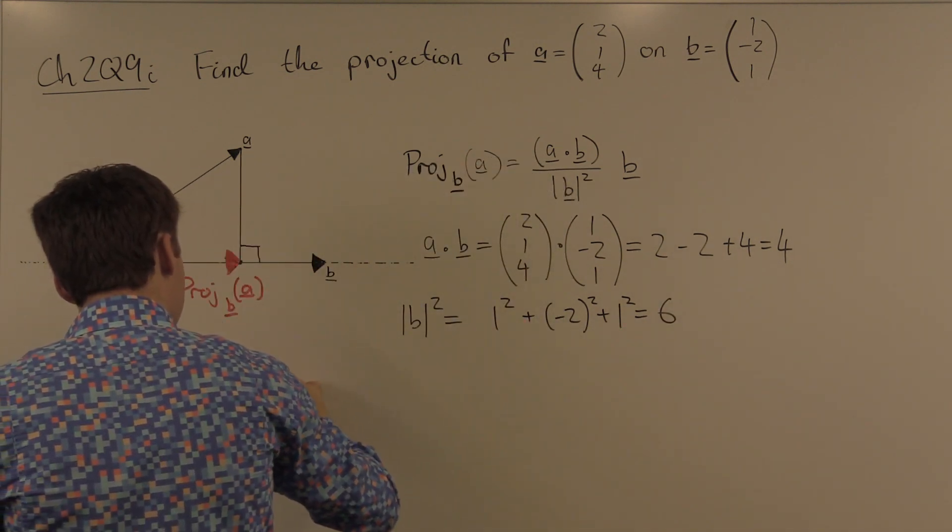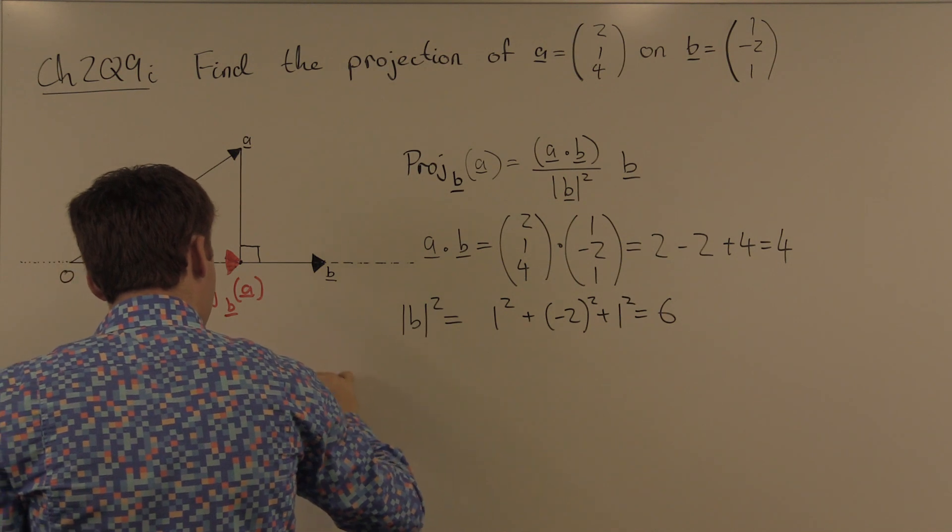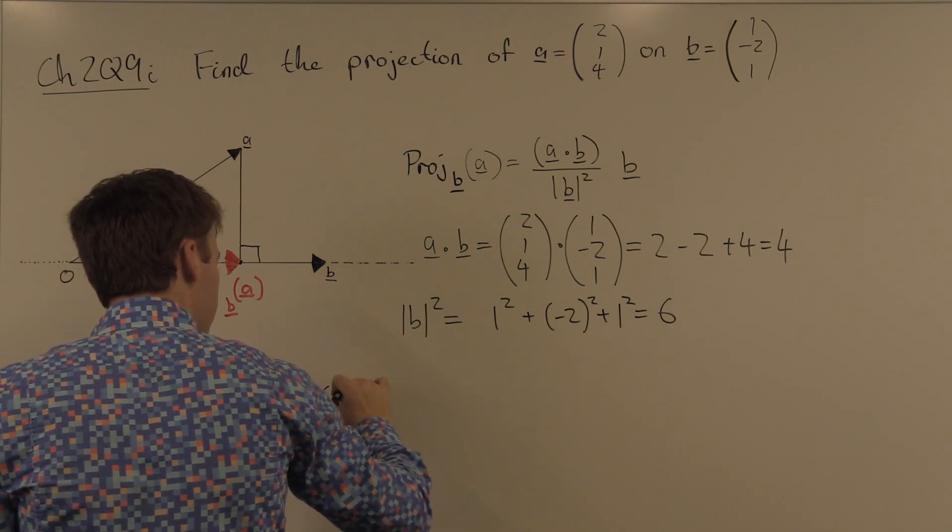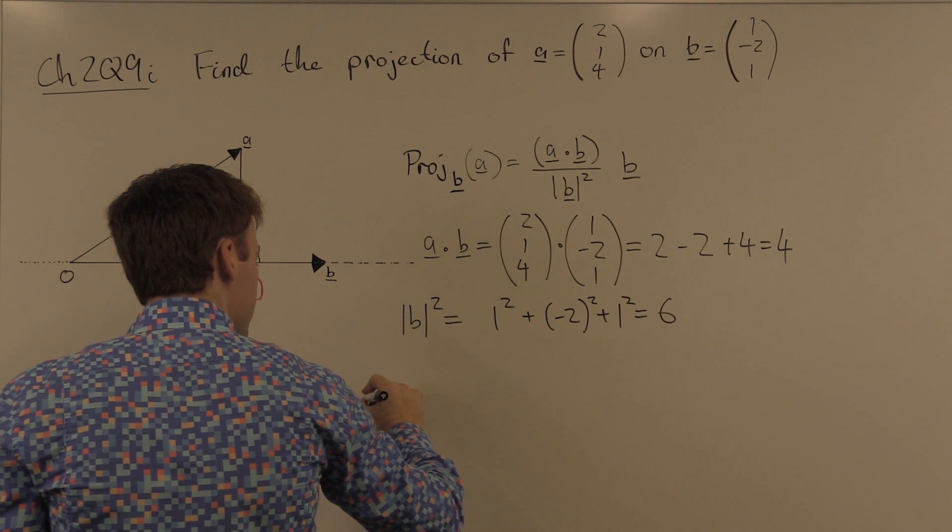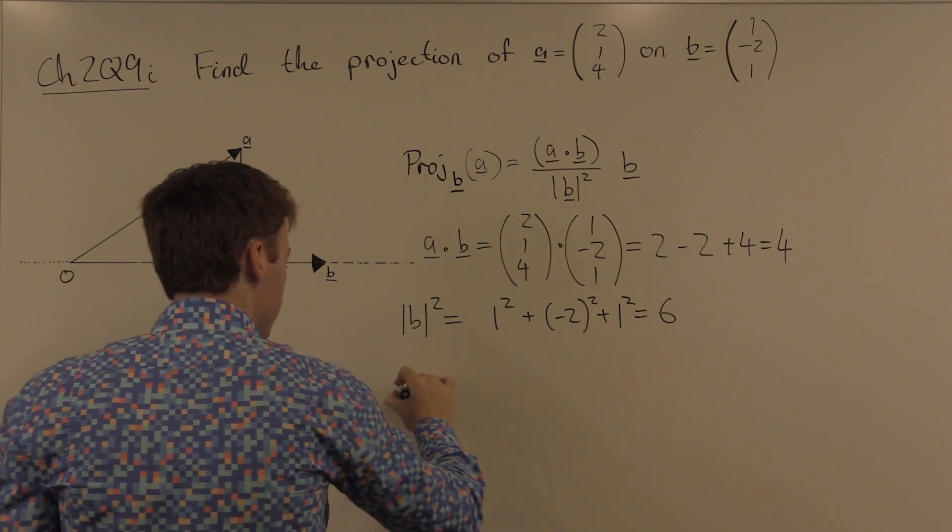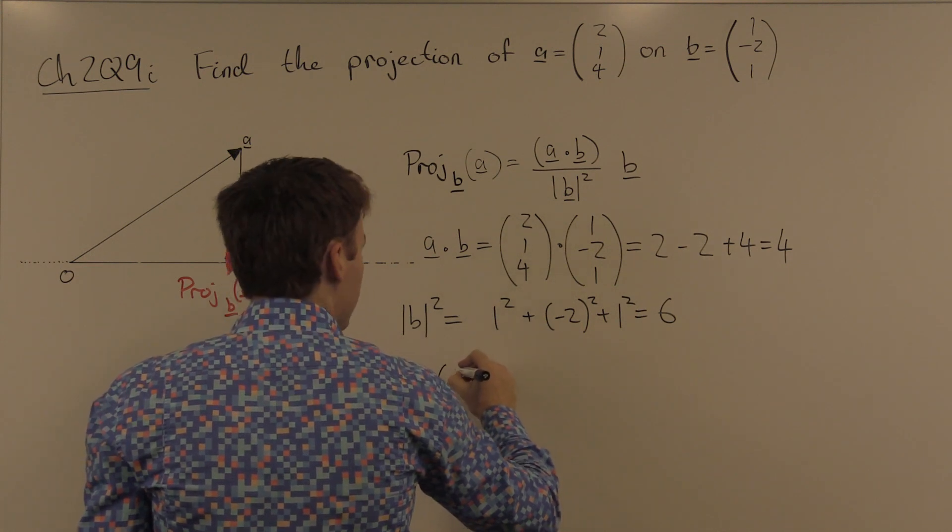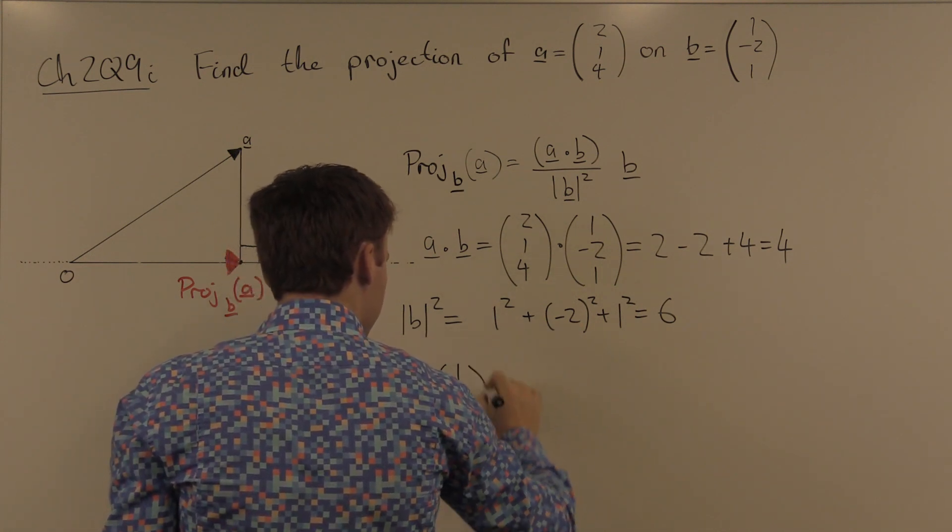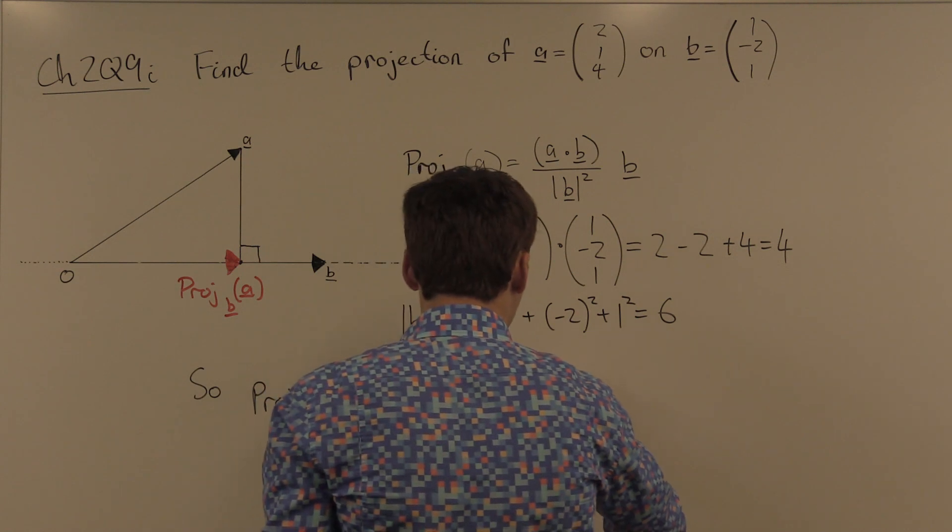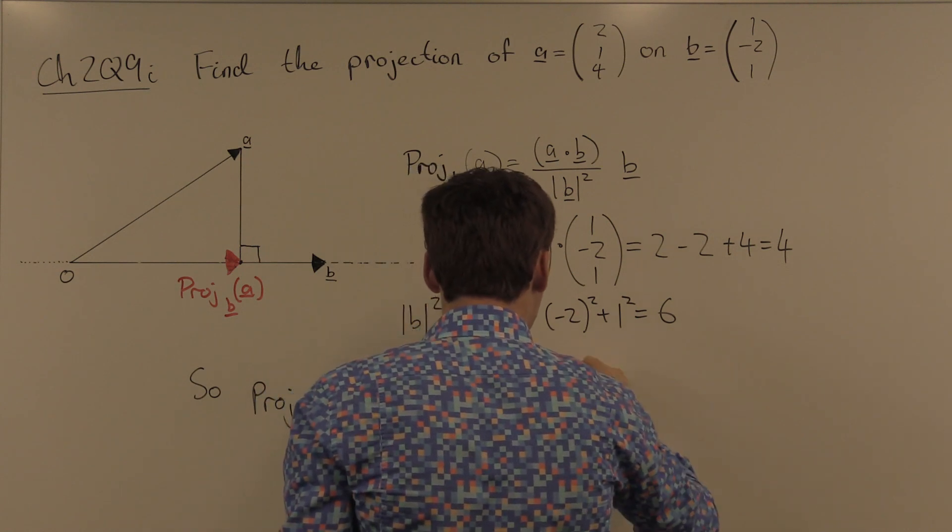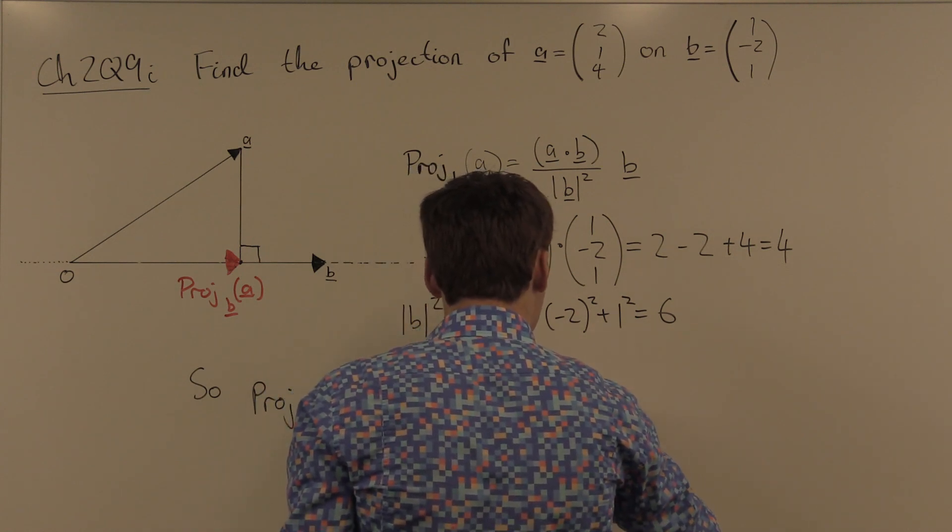So the projection onto b of a is equal to 4 on 6 times the vector (1, -2, 1), which is equal to one third (2, -4, 2).